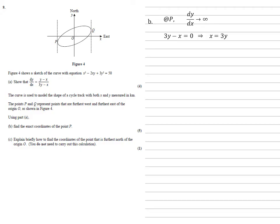Rearranging gives us x equals 3y, which we can use as a simultaneous equation with our equation for the curve by replacing the x with 3y. Expanding the brackets gives us 9y squared minus 6y squared plus 3y squared equals 50. Collecting like terms gives us 6y squared equals 50.